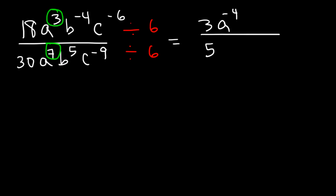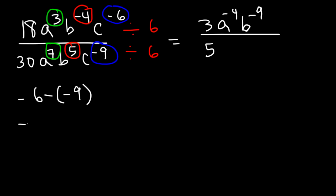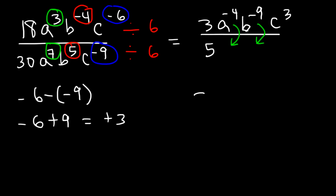Then, negative 4 minus 5 is negative 9, so we're going to have b to the negative 9. And negative 6 minus negative 9 is negative 6 plus 9, which is positive 3, so we have c to the positive 3. There are only two negative exponents on top — a and b — so we're going to bring a and b to the bottom. The final answer is 3c to the 3rd over 5a to the 4th, b to the 9th.